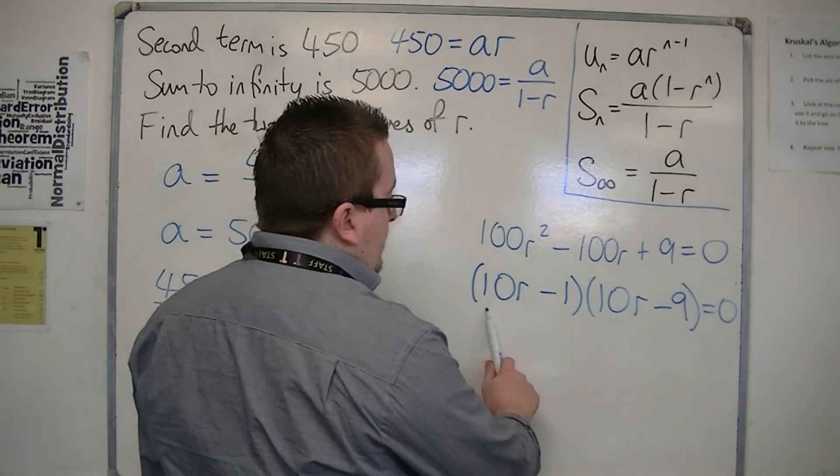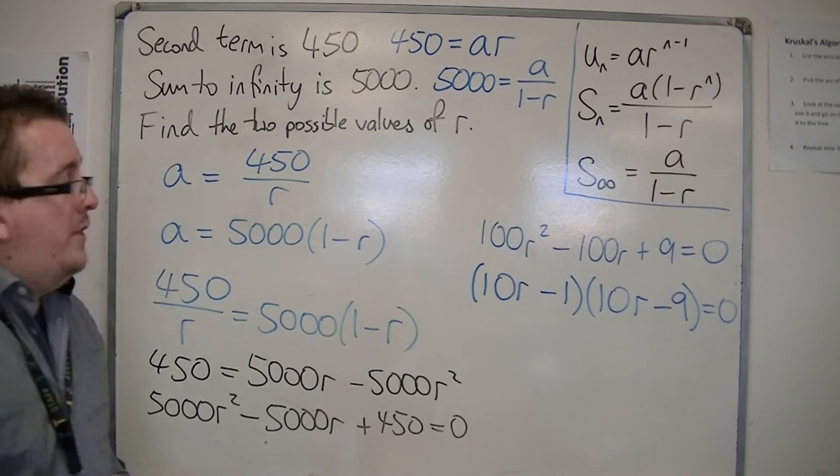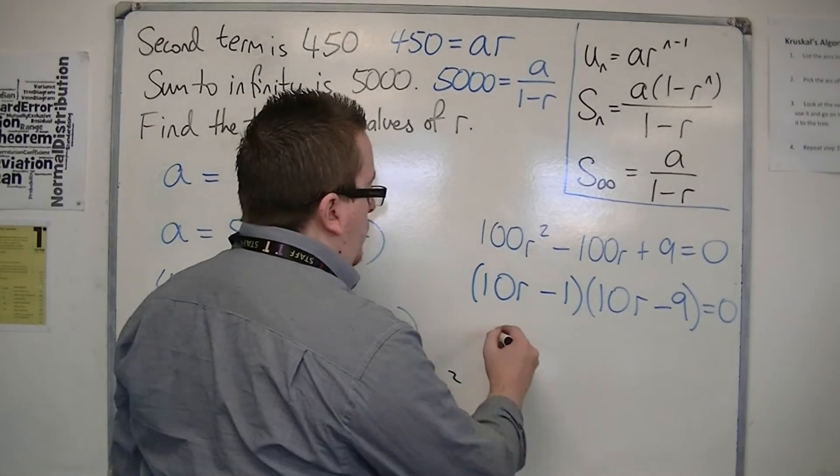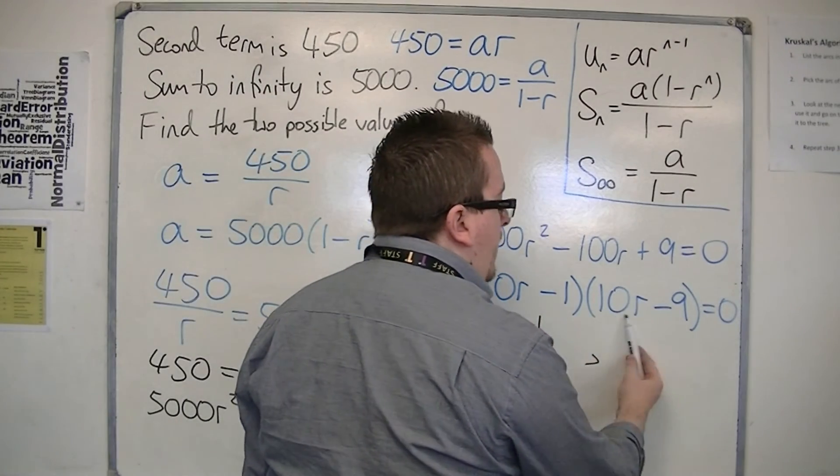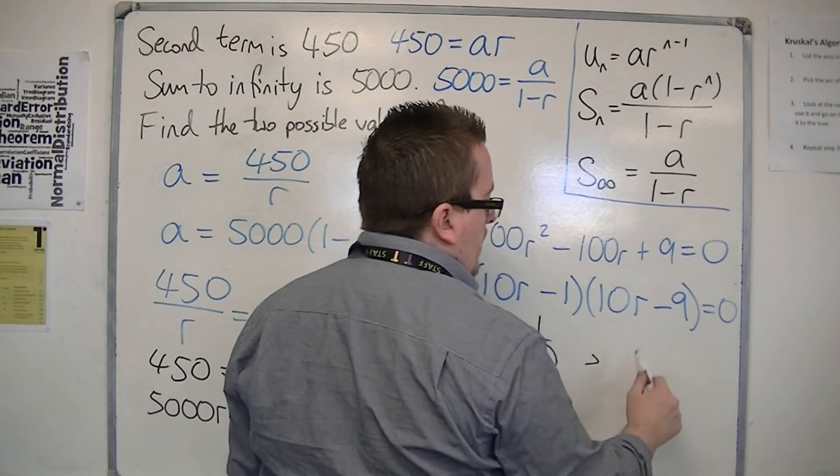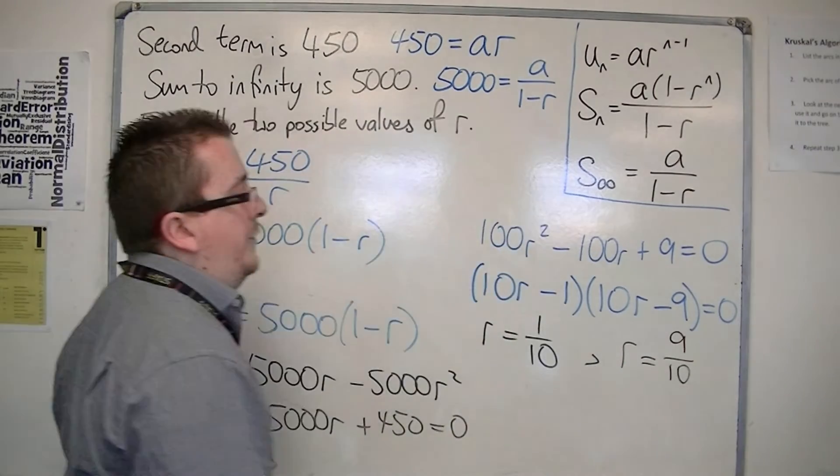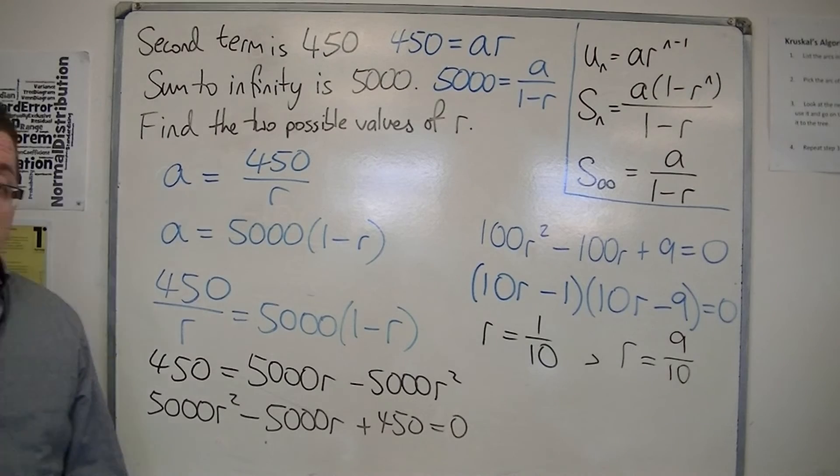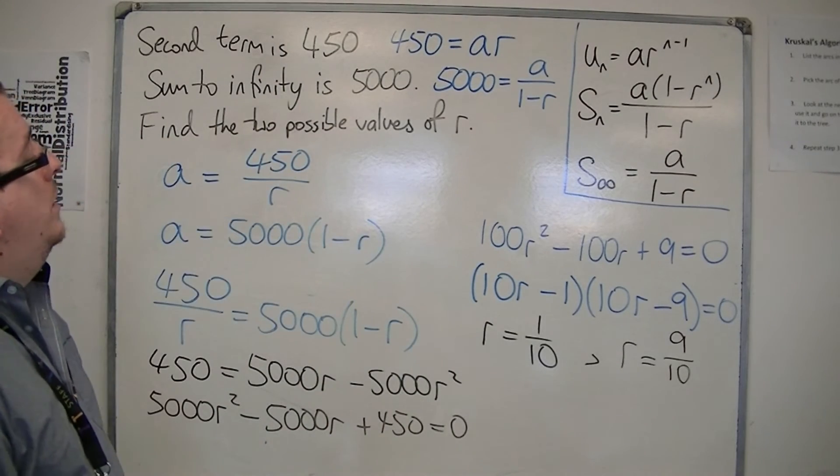So, if this bracket is 0, 10 r minus 1, then we've got r must be equal to 1 tenth. And, if 10 r minus 9 is 0, if that bracket is 0, then r is equal to 9 tenths. And, so, they are the two values of r that work with that initial original data.